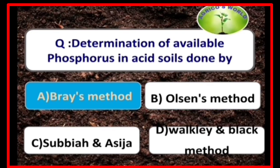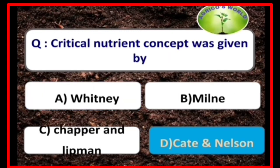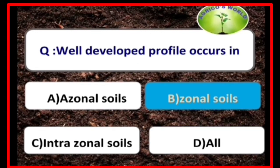Determination of available phosphorus in acid soils is done by the Bray method. Critical nutrient concept was given by Cate and Nelson. Well-developed profile occurs in zonal soils.